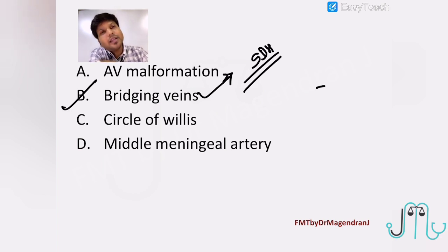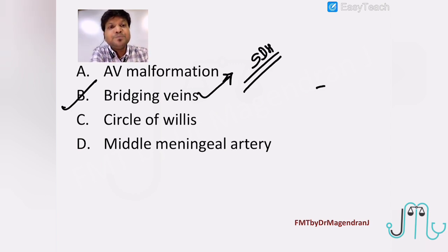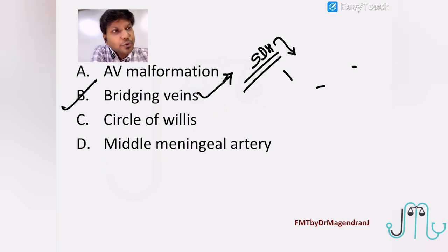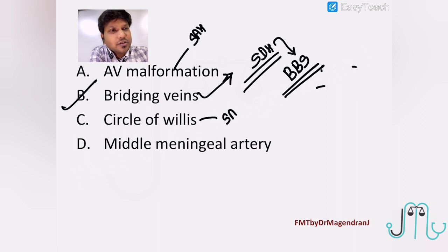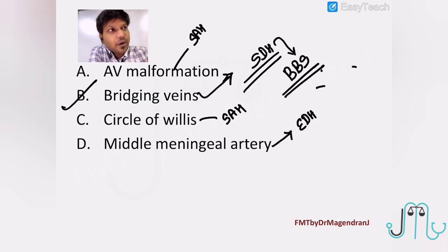Any elderly person coming with this kind of typical history, you have to suspect subdural hemorrhage. Also, subdural hemorrhage is commonly seen with child abuse — battered baby syndrome or shaken baby syndrome. If it is an AV malformation or cerebral aneurysm, it can result in subarachnoid hemorrhage. Middle meningeal artery rupture results in epidural hemorrhage.